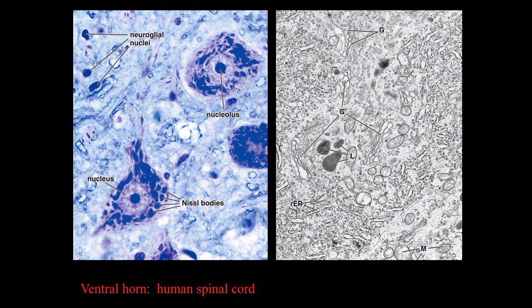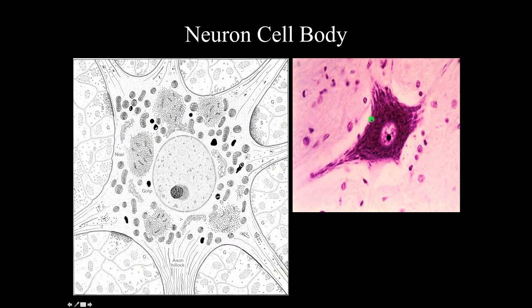The microtubules break up the rough endoplasmic reticulum and cause it to clump, and that clumping of the rough ER is what we see as Nissl bodies at the light microscopic level. Here is another view of a multipolar neuron — you can see the cell body with its punctate staining representing the Nissl substance, the nucleus and nucleolus, profiles of dendrites, and the axon hillock highlighted here. The lines in the cartoon represent the microtubules in the neuron.